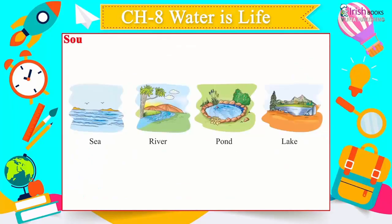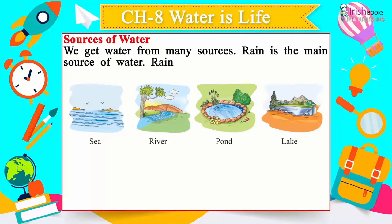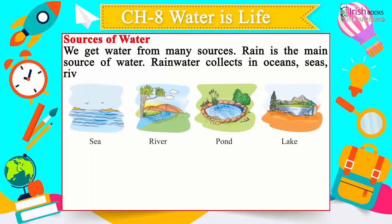Sources of water: We get water from many sources. Rain is the main source of water. Rain water collects in oceans, seas, rivers, ponds, lakes, etc.